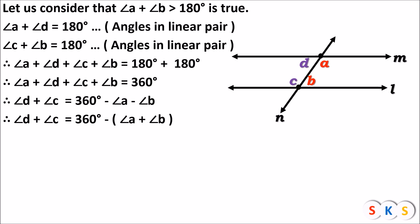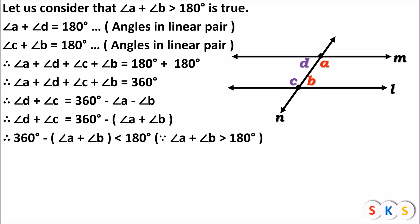Now, if angle A plus angle B is greater than 180 degrees, then what would be the value of 360 minus (angle A plus angle B)? That would be less than 180 degrees. You can verify by substituting a value greater than 180 — for example, if angle A plus angle B is 200 degrees, then 360 minus 200 is 160 degrees. So the sum of angle D and angle C is less than 180 degrees.